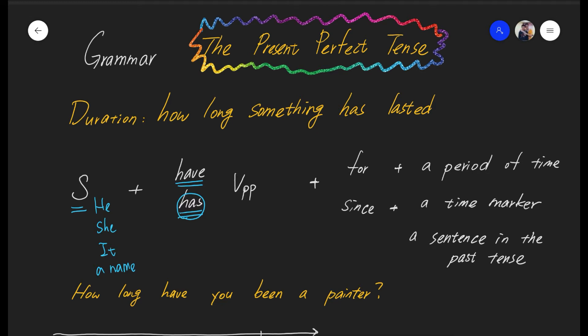Now as for have, we use it with all the other ones, as long as it is not a third person singular subject in front of it. And something called the verb past participle, we talked about this in the previous video. Eat, the past tense will be ate, and finally, eaten. This is the verb past participle, and we have to use this one in the present perfect tense.